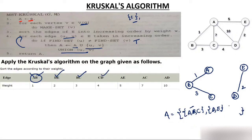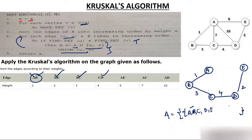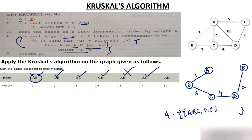Now take CD. Are C and D in different sets? Yes. So select CD (weight 4), add it to A, and union them — now ABCDE all come together. Next, can we use AE? A and E are now in the same set, so the condition Find-Set(U) ≠ Find-Set(V) is false — we cannot select AE. Similarly, AC and AD are in the same set, so selecting them would form a cycle. We do not select any of them.